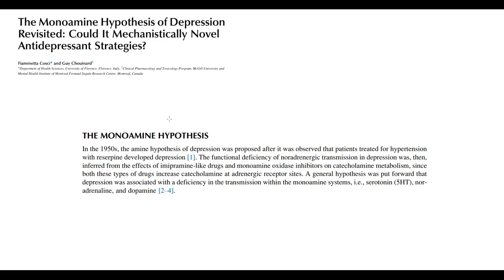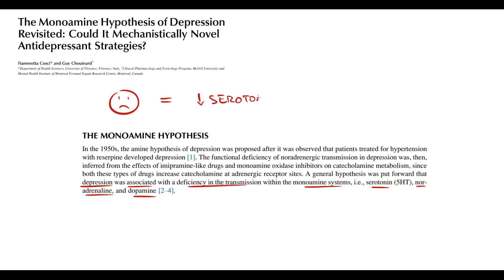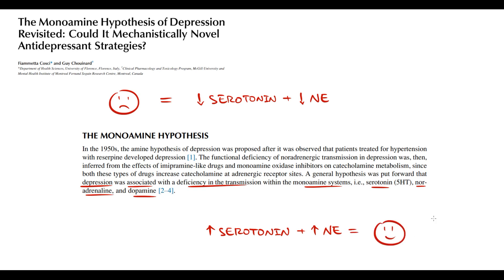Up to this day we treat depression according to monoamine theory. We believe that depression is caused by deficiency of neurotransmission, which can be caused by low levels of serotonin and norepinephrine, and to a lesser extent dopamine, in the synapse. So we believe that depression is caused by a decreasing amount of serotonin and norepinephrine in the synapse. The most obvious approach to treat depression is to increase the amount of serotonin and norepinephrine in the synapse.